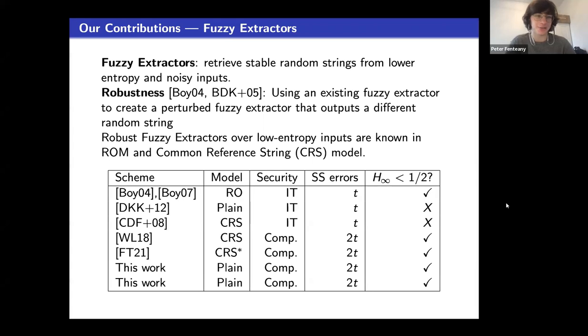Finally, just to once again bring it back around to robust fuzzy extractors, one application of these non-malleable point function obfuscations with associated data is we use them to achieve two constructions of plain model robust fuzzy extractors that remain secure when enrolled from sources with entropy less than half their length. Thank you, and I hope to see you in the full talk.